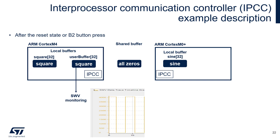Let's analyze the application step by step. At the beginning, after reset, the user buffer on Cortex-M4 contains the square wave as initialized. Within Cortex-M0+ space, the local buffer holds the sinusoidal samples. The shared buffer contains all zeros, so on the single wire viewer we will see the square wave data.